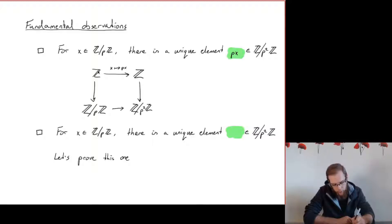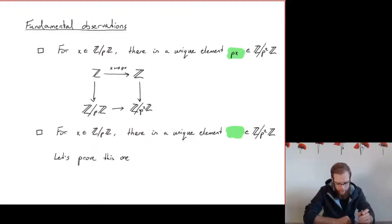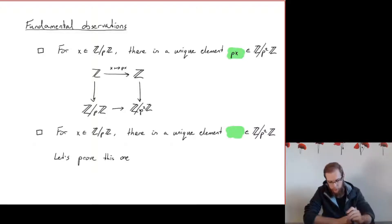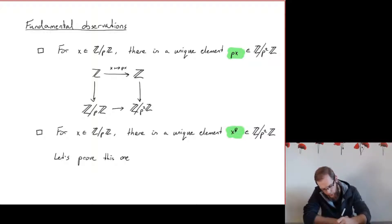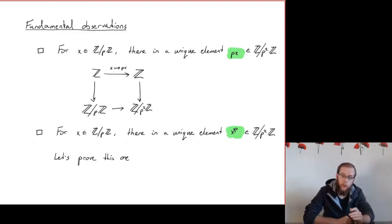You can see this by looking at the composite map — first multiplication by p on the integers, then the quotient map to Z/p²Z — and noticing that all multiples of p are in the kernel, because if you have a multiple of p and multiply it by p then it's divisible by p², so it goes to zero. This composite map factors via Z/pZ, giving a map that is multiplication by p on Z/pZ landing in Z/p²Z. Analogously, for every element x in Z/pZ we can also find a unique element x^p in Z/p²Z.